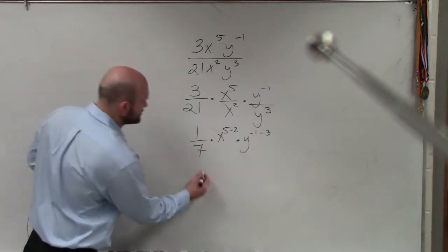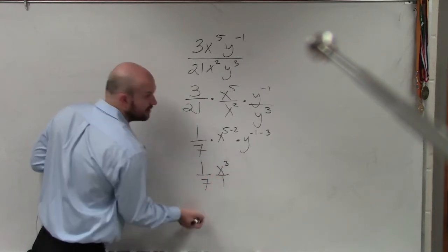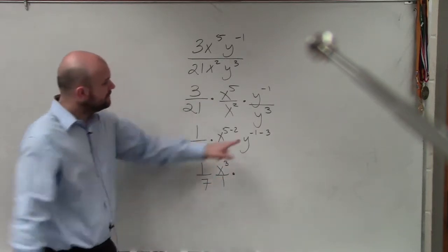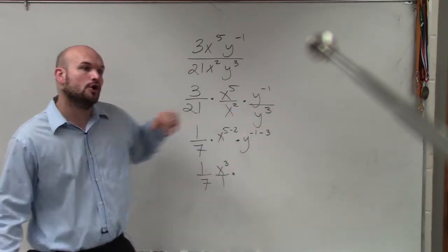So x to the 5 minus 2 is going to be x to the 3rd. It's really over 1. We keep it in the denominator. If you owe me $1 and you borrow three more dollars, you now owe me $4.